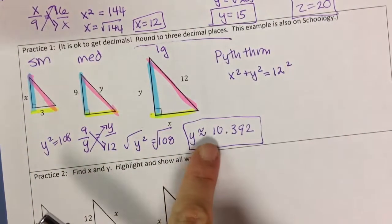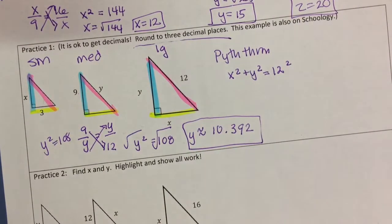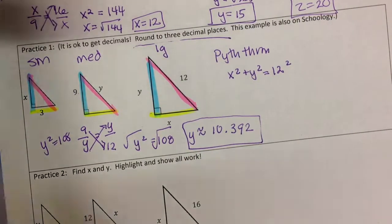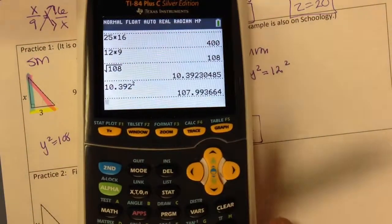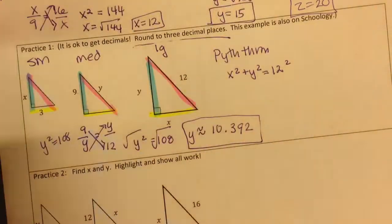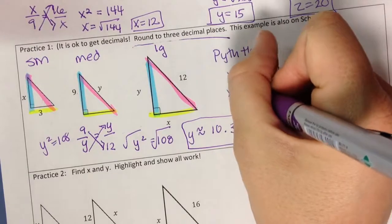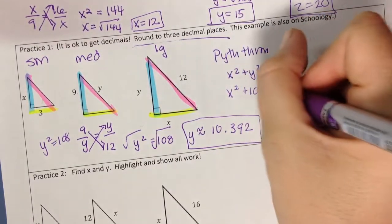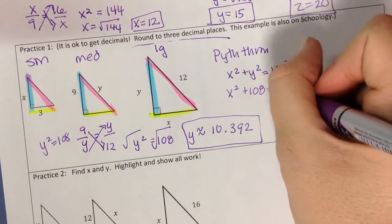So instead of taking 10.392 and squaring that, because you're going to get the incorrect answer if you do that, if you square 10.392 you get 107.994 essentially. We want that entire 108. So I would fill this in with x squared plus 108 equals, and then 12 squared is 144.